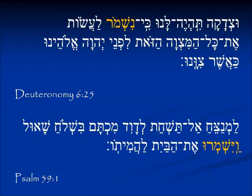In Deuteronomy 6:25 we see Nishmar — this is the Nun prefix, meaning 'we will do it.' In Psalm 59:1 here is Yishmaru — the Yud prefix for the third person and the U suffix for the plural. They are guarding the house in order to kill.